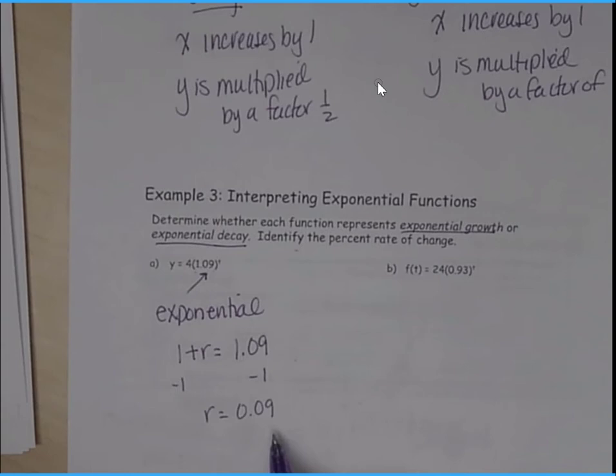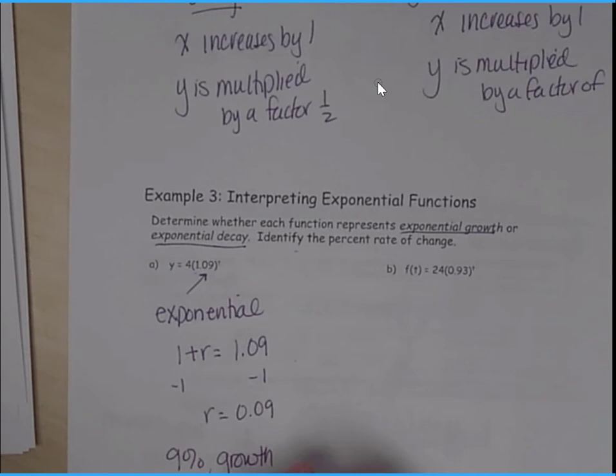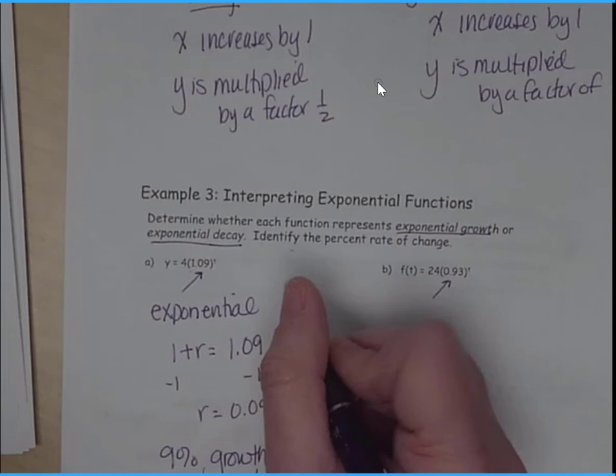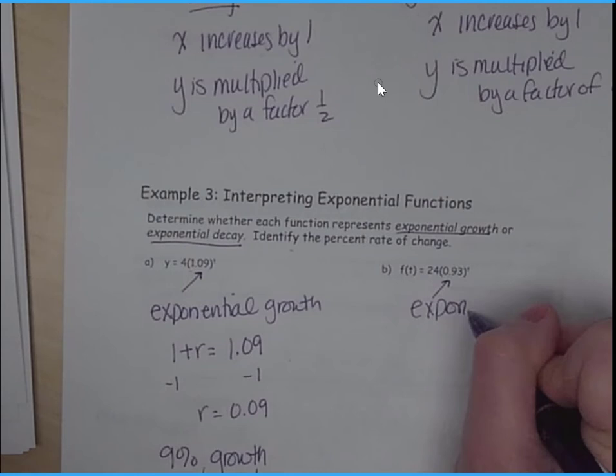Now here, I see this is less than 1. Oops, I forgot to write growth. This is an exponential growth. This then is going to be an exponential decay, because it is decreasing. So I have an exponential decay.